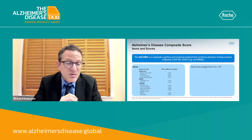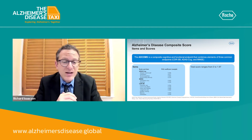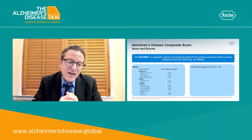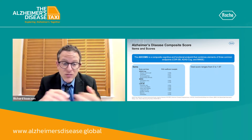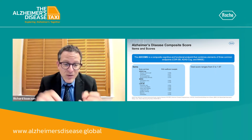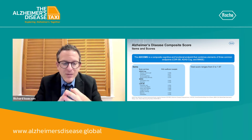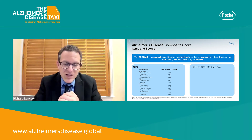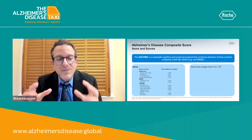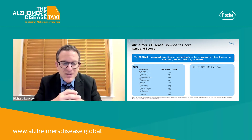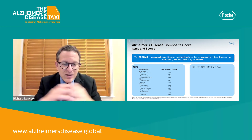They also took two parts of the Mini Mental State Exam, including orientation time and drawing. And finally, they used the CDR sum of boxes, which included all six domains: personal care, community affairs, home and hobbies, judgment and problem solving, memory, and orientation. So clearly this score is heavily weighted on the CDR sum of boxes domains.